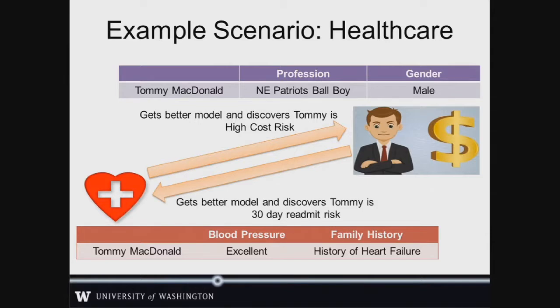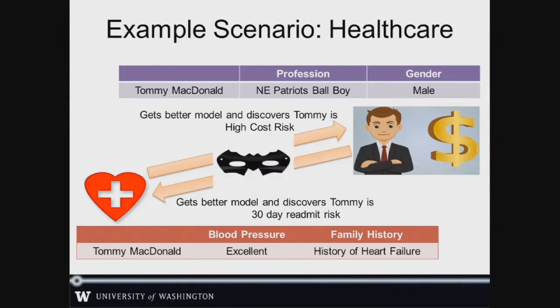Now imagine Tommy's doctors had a model that leveraged career information. They would know his profession as a New England Patriots ball boy was extremely stressful at the end of the year, and he's actually a much higher risk for readmission — and a similar scenario for his insurance company if they had access to his family history. But Tommy certainly doesn't want his Seattle doctors to know he's employed by the New England Patriots, or his insurance company to know his private health data. Our protocol allows Tommy's doctors and insurance company to build models that learn from all of Tommy's data without leaking this information.